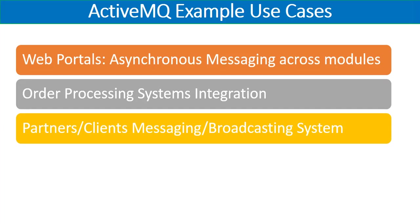Another example is integrating multiple partners or clients with a messaging and broadcasting system. Whenever you have announcements, notifications, or alerts, and you want all interested partners or clients to receive them, you can use a message broker like Apache ActiveMQ. You produce and publish messages to topics, and all parties subscribed to those topics will receive the messages and get notified.